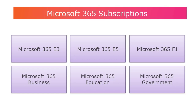On the enterprise side, we have Microsoft 365 E3 and E5, with E5 being the one with the most features, as well as Microsoft 365 F1, which is for field workers. There is also Microsoft 365 Business for smaller enterprises, a version for education called Microsoft 365 Education, and a version for the U.S. government called Microsoft 365 Government.